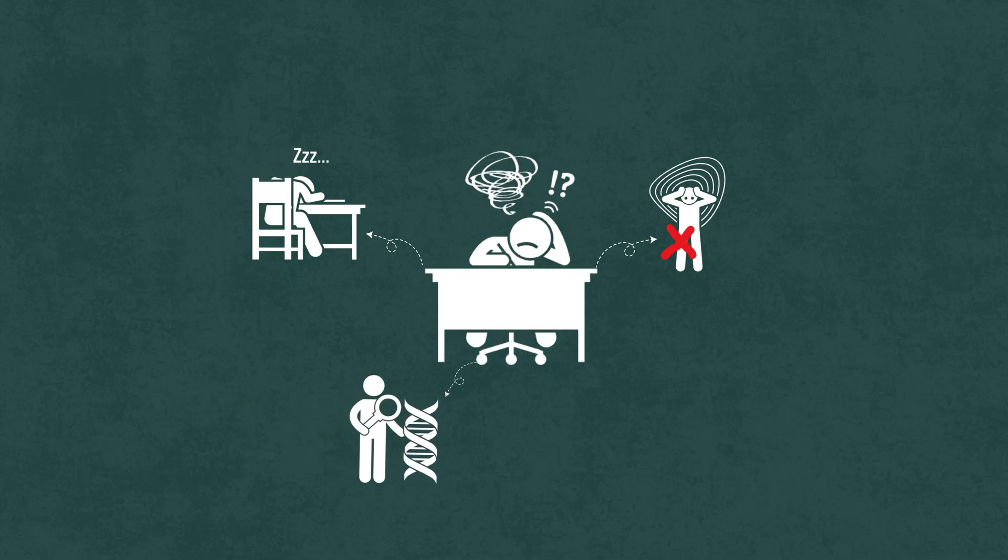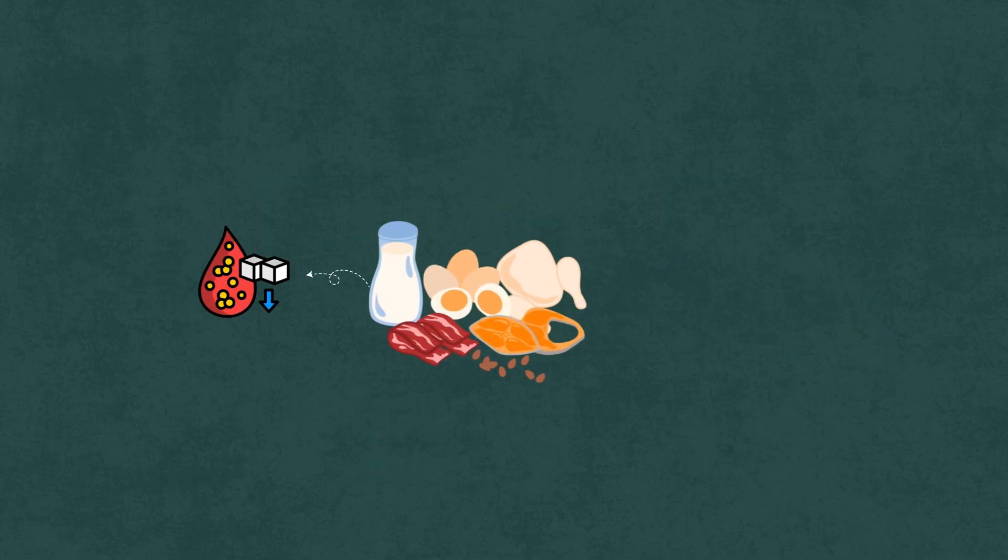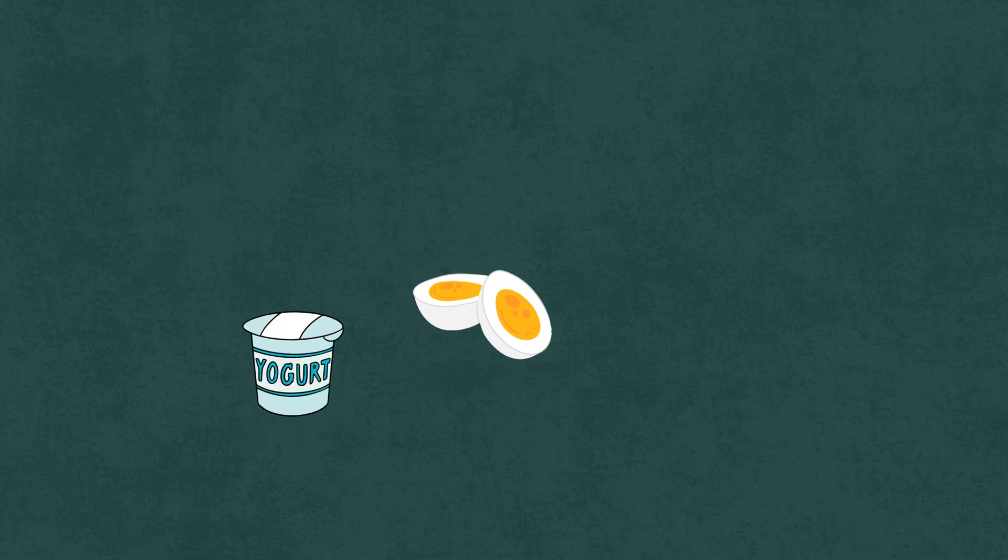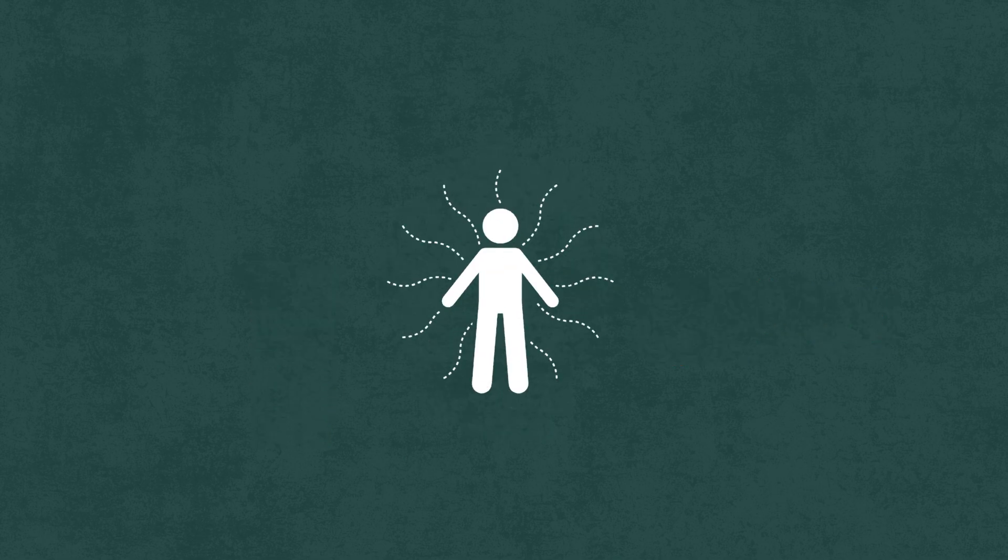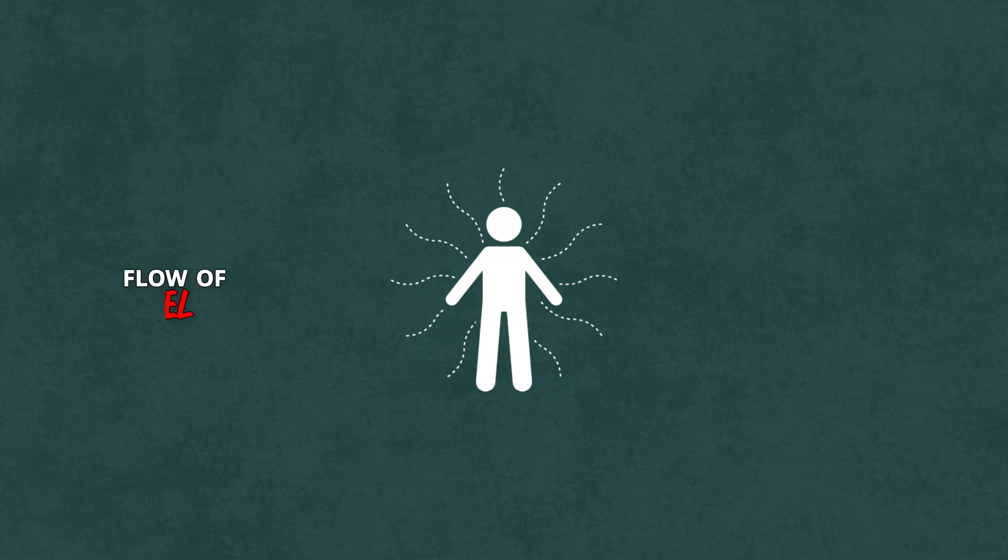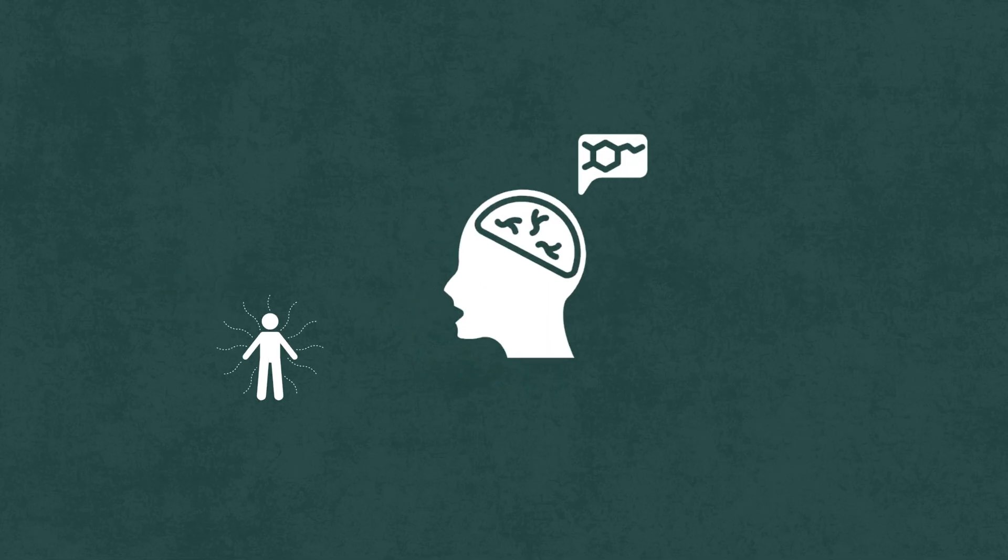Now, compare that to someone who eats a protein-rich, low-glycemic breakfast, like eggs, Greek yogurt, or oats with nuts. Their blood sugar rises slowly, energy stays consistent, and the brain gets a steady flow of fuel. This stabilizes neurotransmitters like acetylcholine and norepinephrine, the chemicals responsible for alertness and memory.